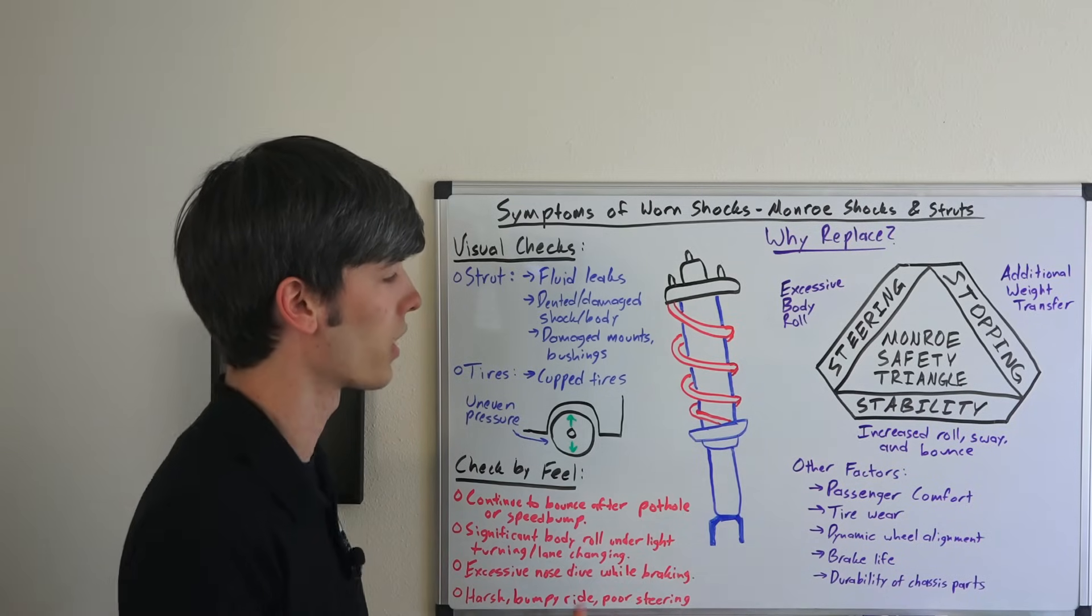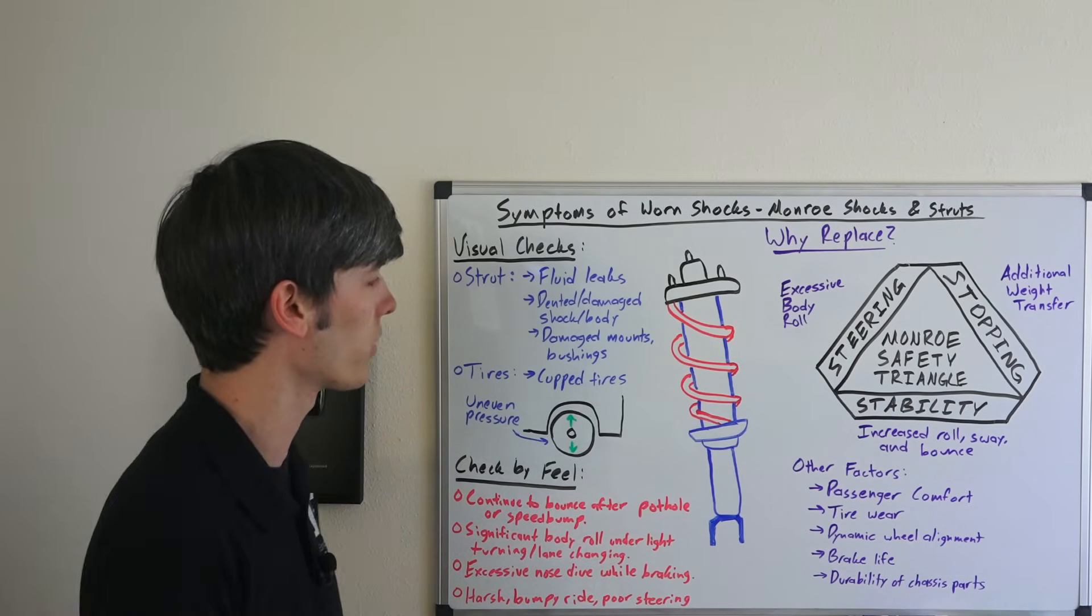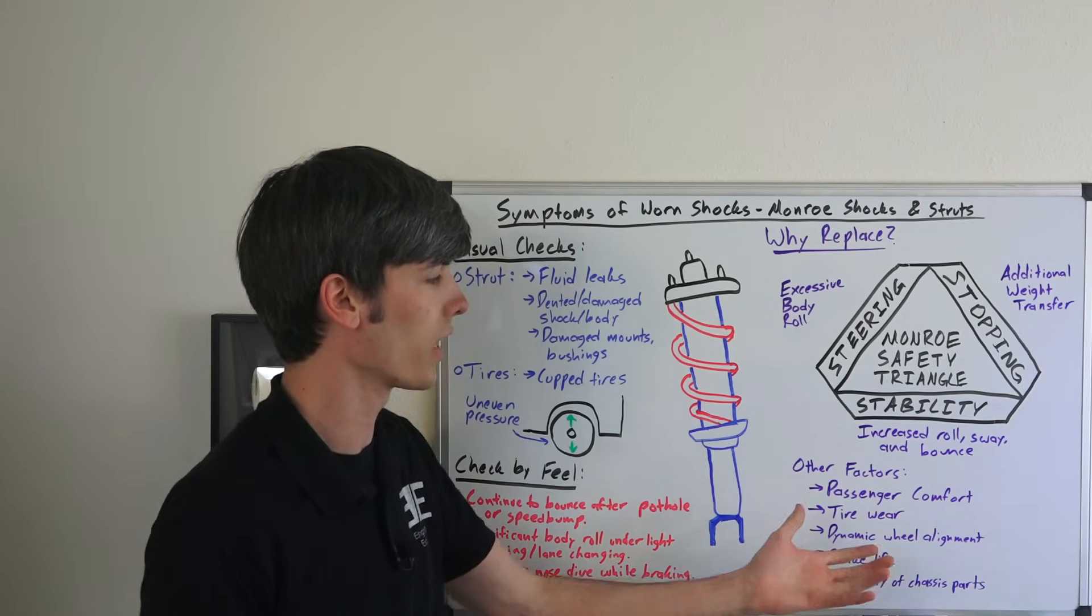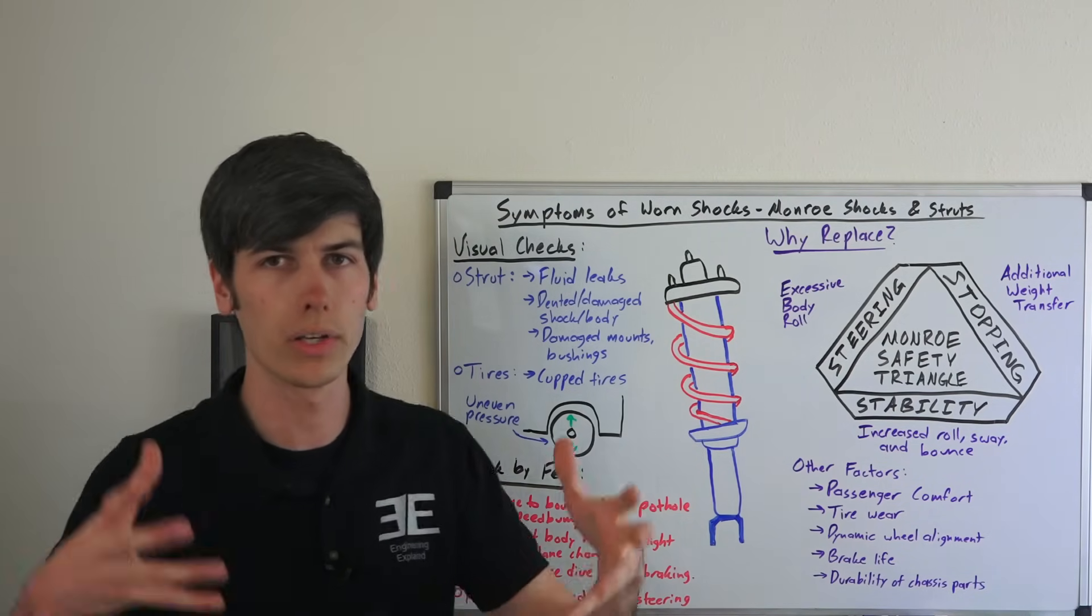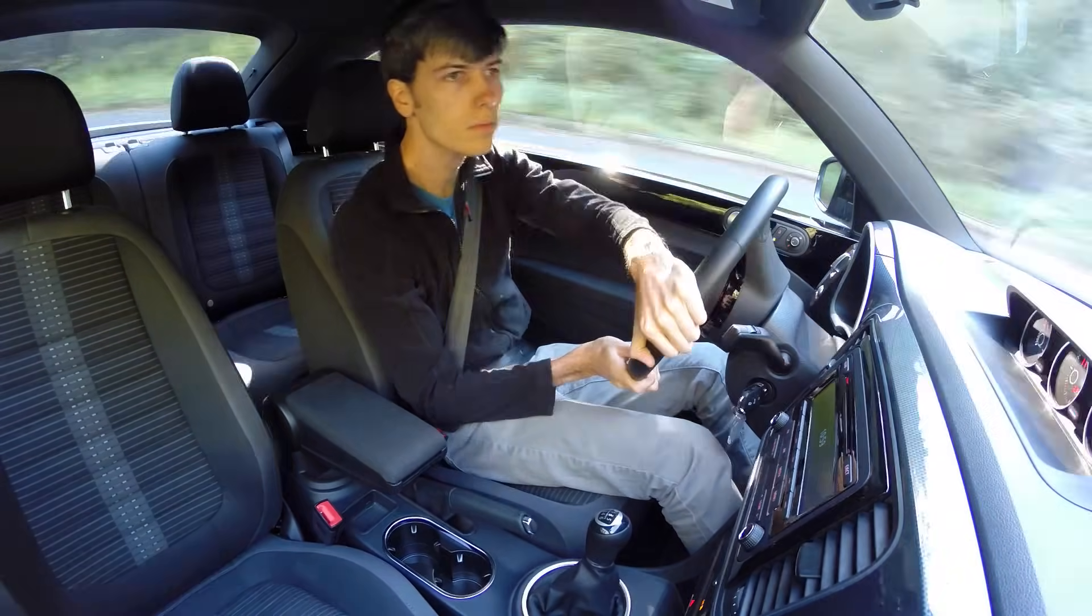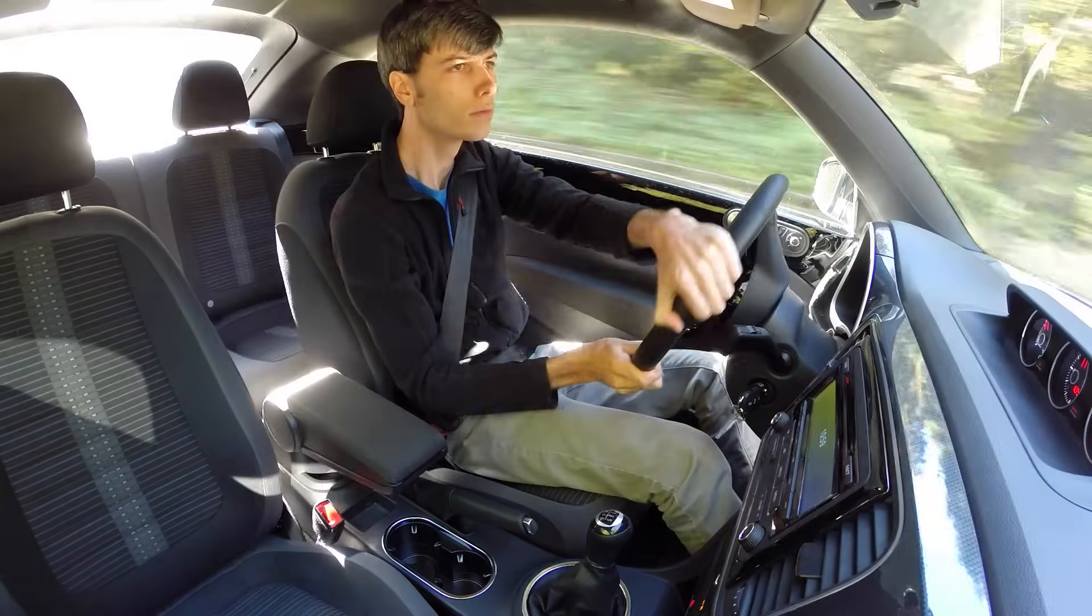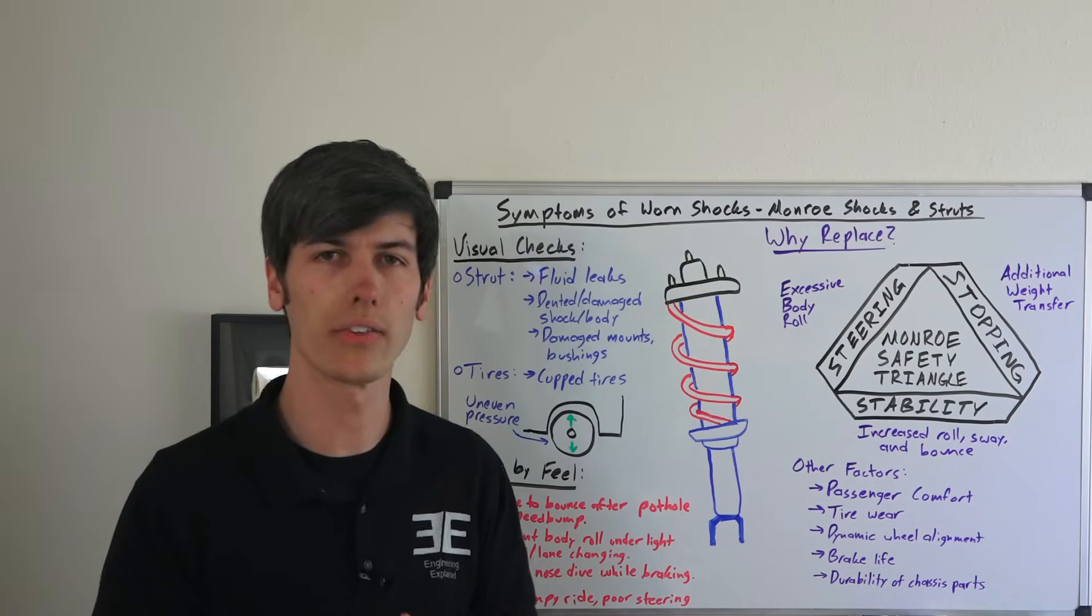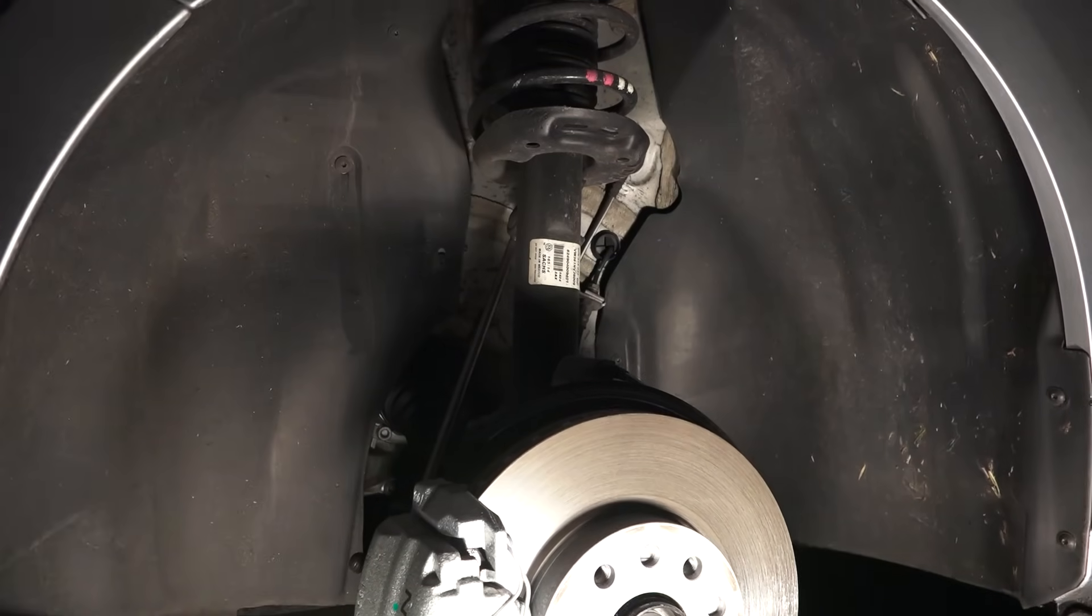Some other things to keep in mind: passenger comfort, tire wear like I was mentioning previously with the uneven pressure from an oscillating tire, dynamic wheel alignment - how your wheel is aligned with different body roll and things like that. If you have more body roll than you normally would then it's going to get out of that alignment. Also brake life and the durability of the chassis parts if there are other things that are taking the load other than the shock because it's worn out.